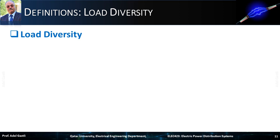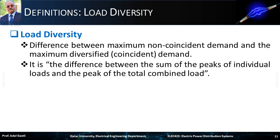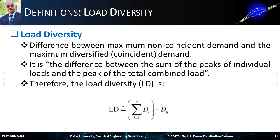Now let's define the load diversity. It is the difference between the maximum non-coincident demand and the maximum diversified demand — in other words, the difference between the sum of the peaks of individual loads and the peak of the total combined load. The load diversity is given by an equation where n is the number of connected loads, DI is the individual peak demand of each connected load, and DG is the peak of the combined load. Note that load diversity is not a factor but is usually expressed in kW, kVA, or amperes.